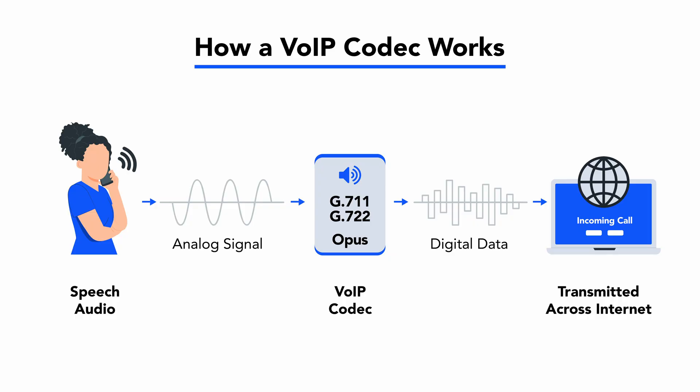A VoIP codec works by receiving one speaker's audio input, coding this analog audio signal into digital audio, transmitting this digital audio signal across VoIP telephony networks, and then finally decoding the digital signal back into analog on the receiver's end, where it comes through as clear audio. This all occurs in a few hundred milliseconds, enabling real-time VoIP conversation.